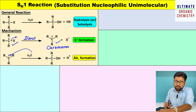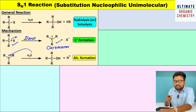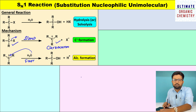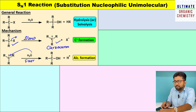In the second step, this ionic species — that is the carbocation — becomes a neutral species, that is an alcohol. So this step is the faster step. In kinetics, the slow step is always the rate determining step. In this case, the first step — that is the formation of carbocation — is the rate determining step.